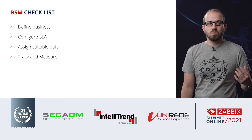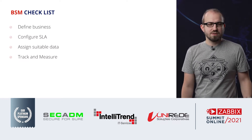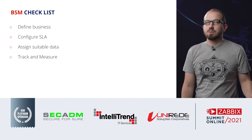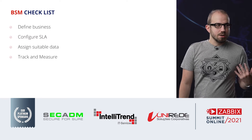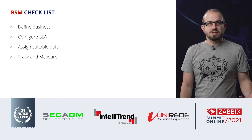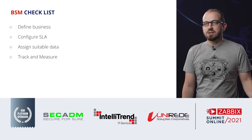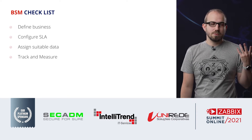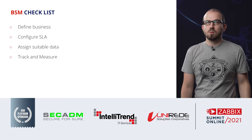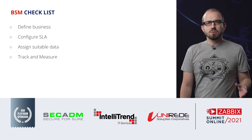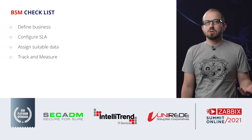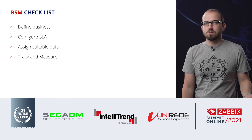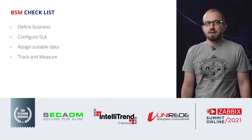We need to define what our business is — what services we provide and what is responsible for keeping those services alive. Then we need to define our expectations of the business. We can call them SLA, or as it's also called, service level agreement or service level objective, to actually understand what we expect from the services. Then we need to define what reflects how the service is doing, so we need to assign suitable data which will reflect what is going on with the services. And then we just track and measure.